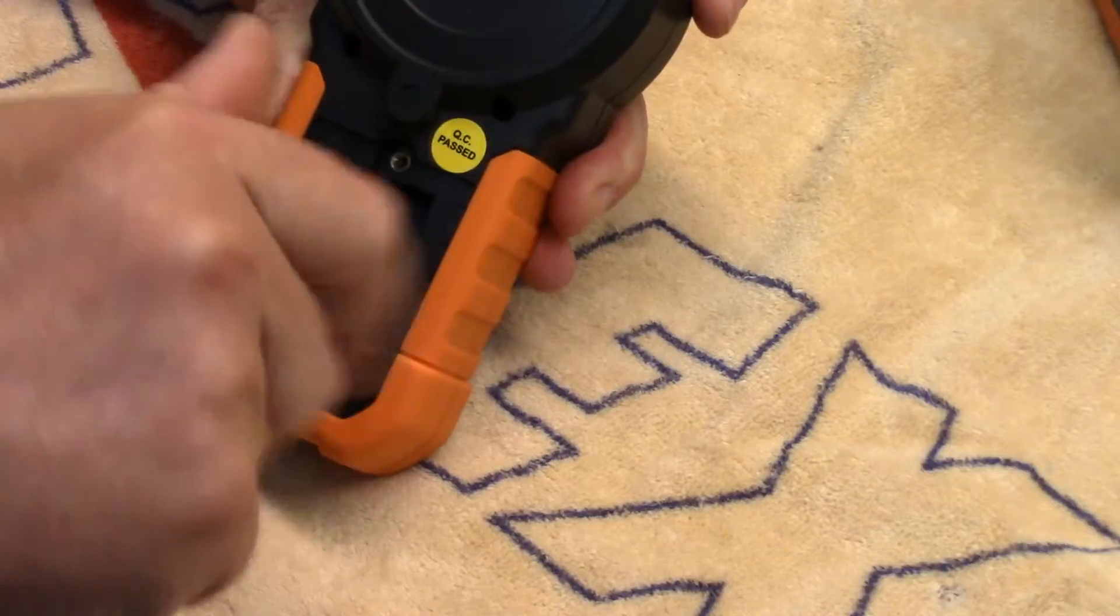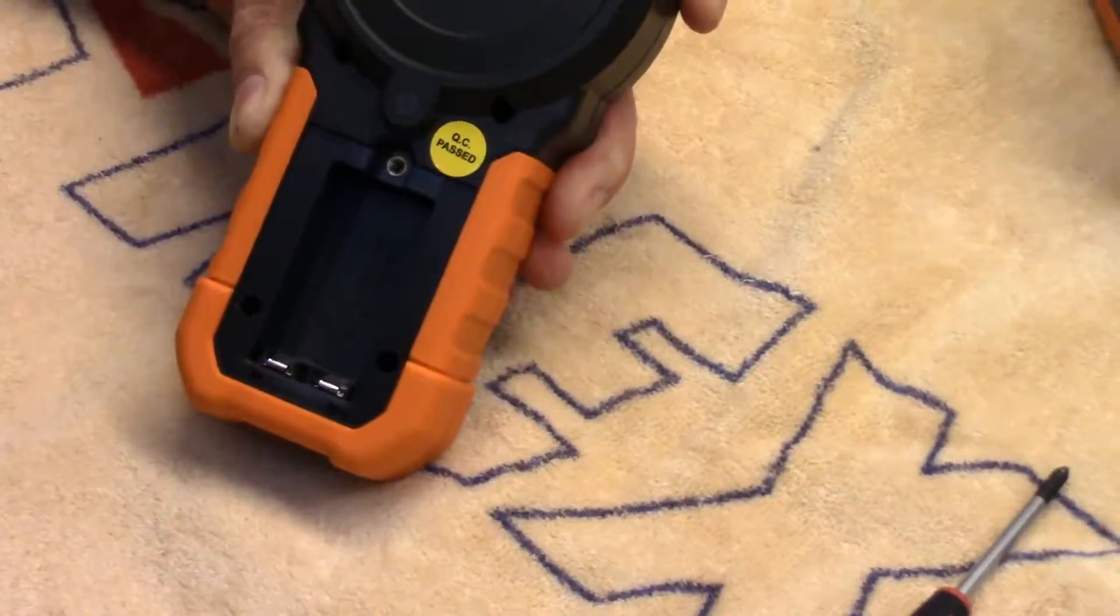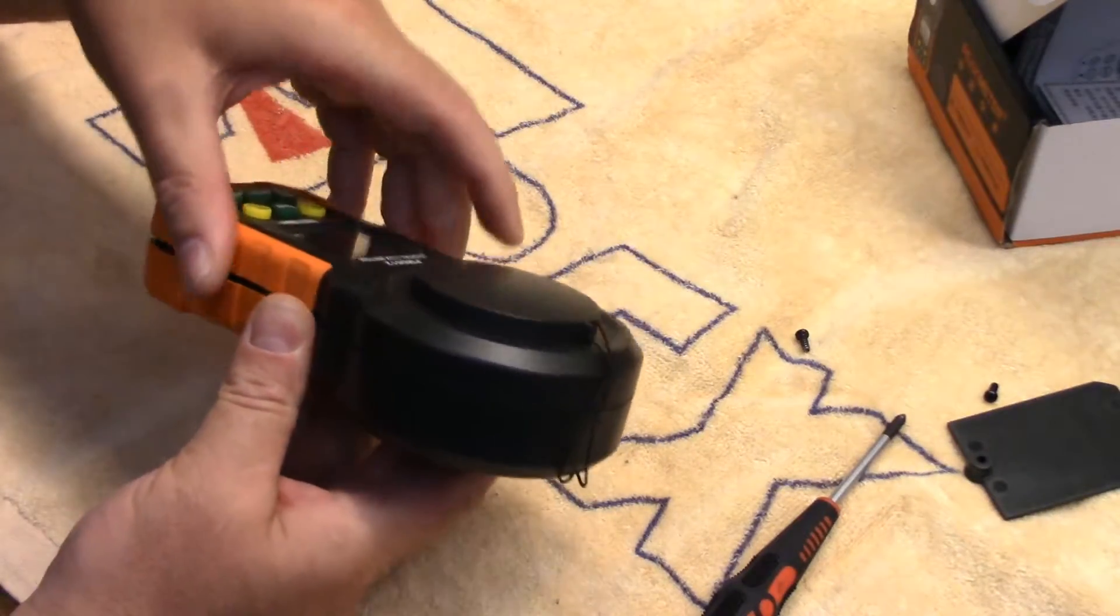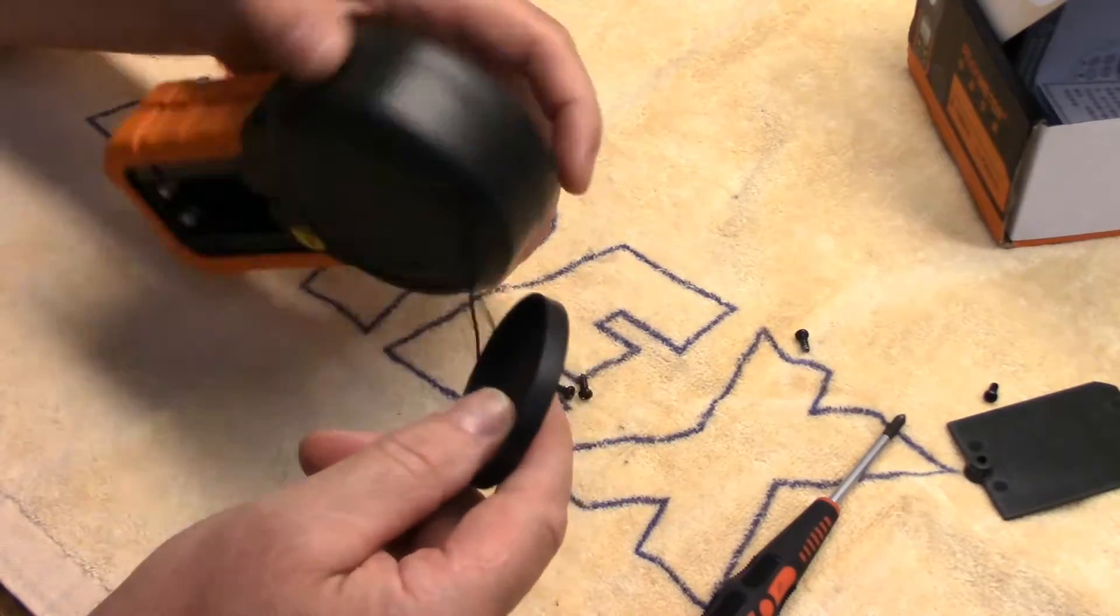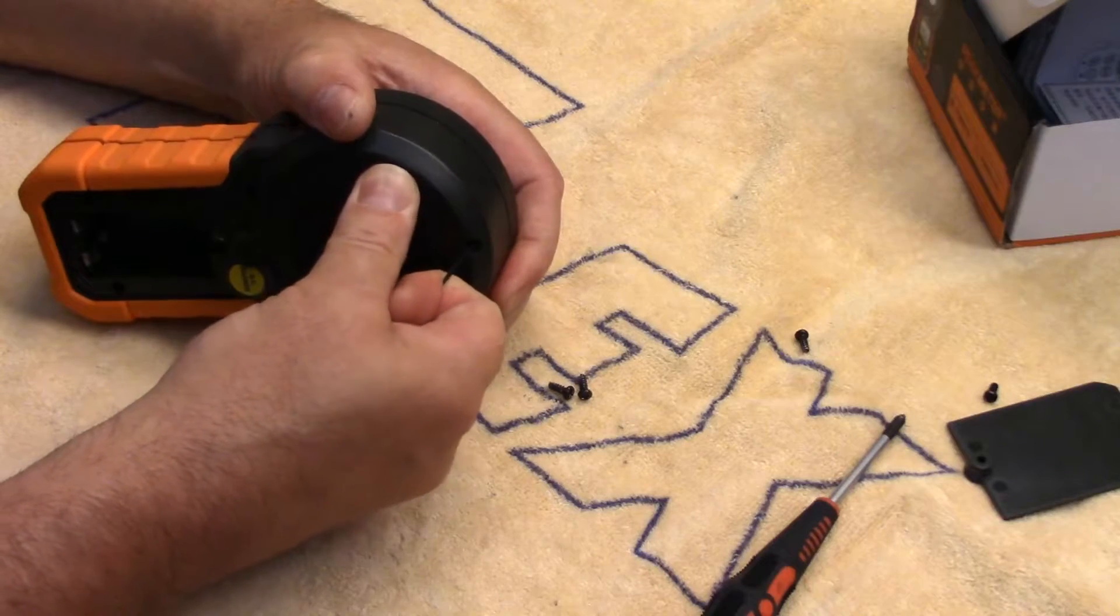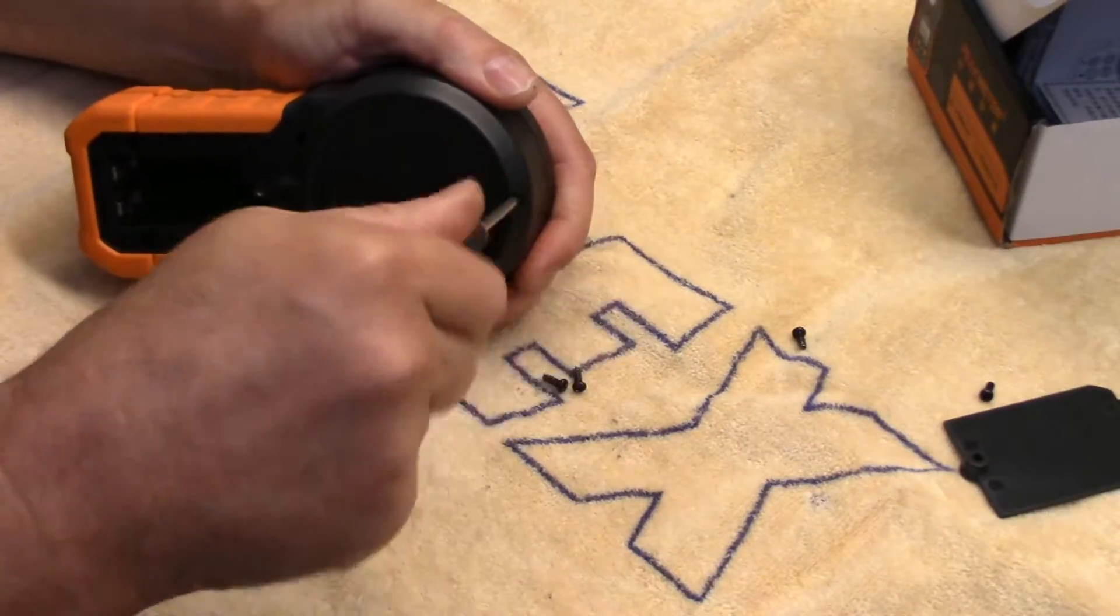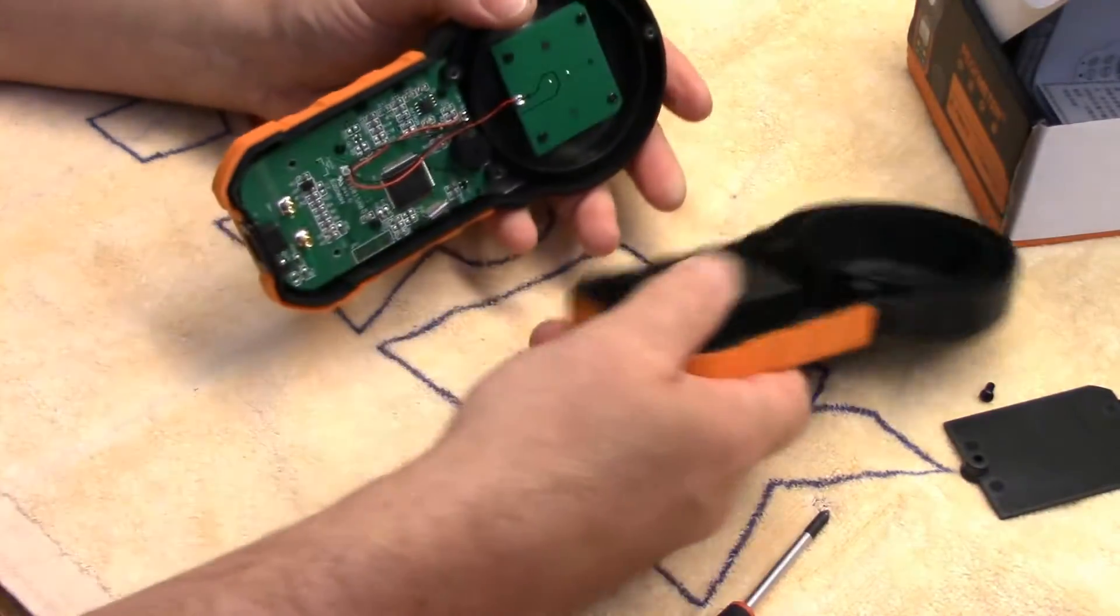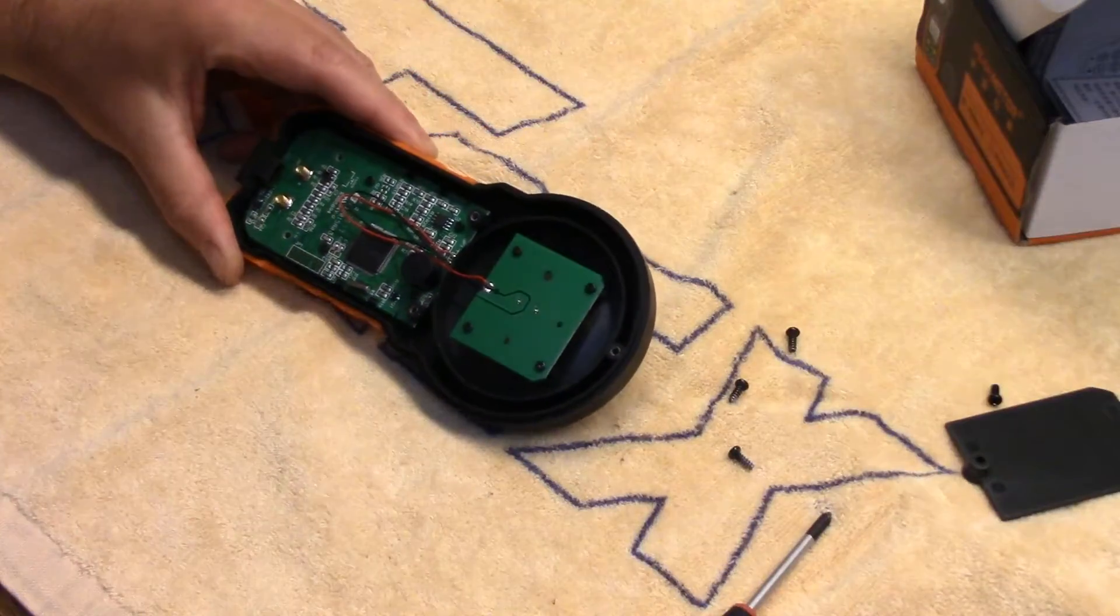These are all Philips screws, looks like we've got four to take out. Okay, screws out. What are we missing here? There's a fastener behind that cover. Oh no, it's just a little plug. Sure enough, another screw. I'll see if there's any wires connecting the back half to the front. Nope, okay.